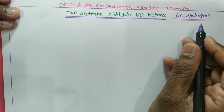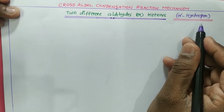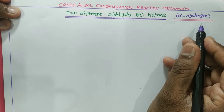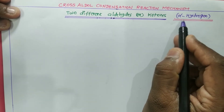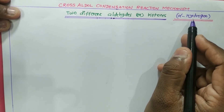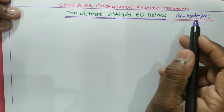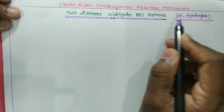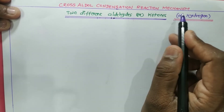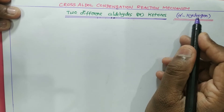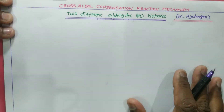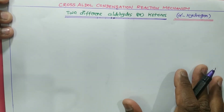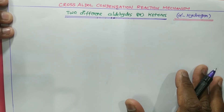In cross aldol condensation, either two different aldehydes or two different ketones are involved. The very important condition is that both must have alpha hydrogen. Both the different aldehydes or both the different ketones must have alpha hydrogen — only then can cross aldol condensation take place.